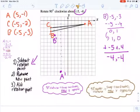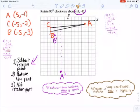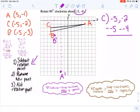Okay. Last but not least, time to do C. I'm going to shrink this down. Tuck it away over here. Now for C. Negative 5, negative 2. All right. Once again, I'm going to subtract my rotation point. Minus negative 5, minus negative 4. This gets me to 0, 2.